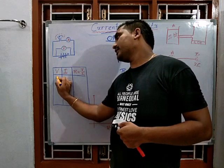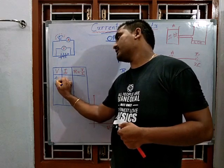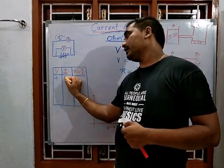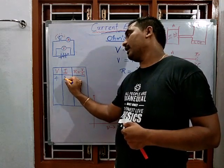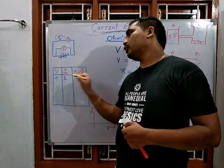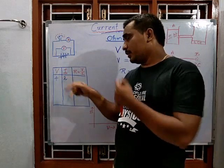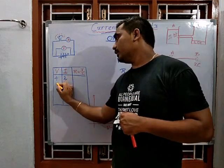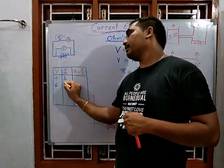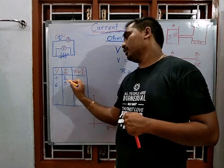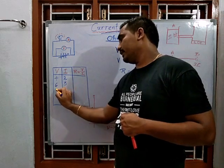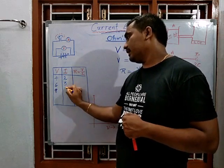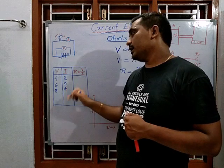For example, when a potential difference of 4 volts is applied, the current is 2 amperes. When the potential difference is changed to 6, the current increases to 3. When changed to 8, the current is 4.